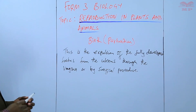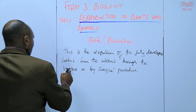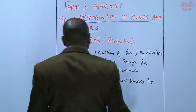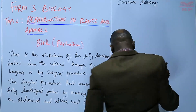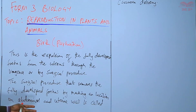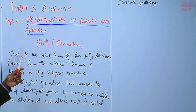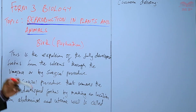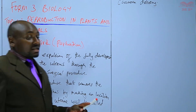The surgical procedure that leads to birth is what is known as cesarean section. So the surgical procedure that removes the fully developed fetus by making an incision on the abdominal and uterine wall is called cesarean delivery. So you can either have a normal delivery whereby the fully developed fetus is expelled through the vagina or through the birth canal, but if it is done via a surgical procedure which involves an incision on the abdominal or uterine wall, then that is called cesarean delivery.